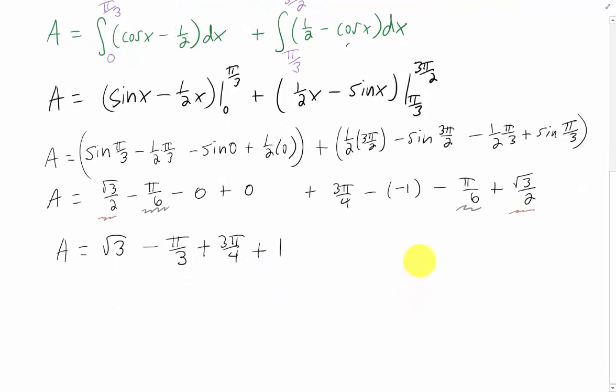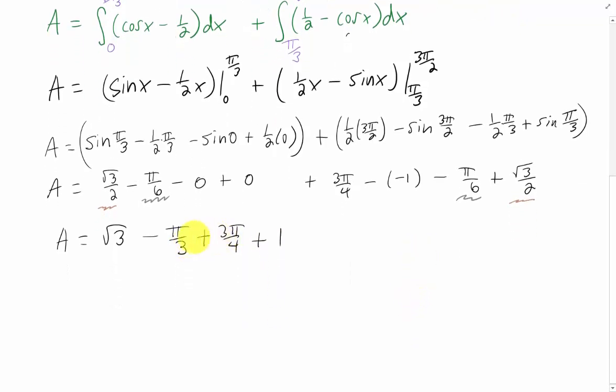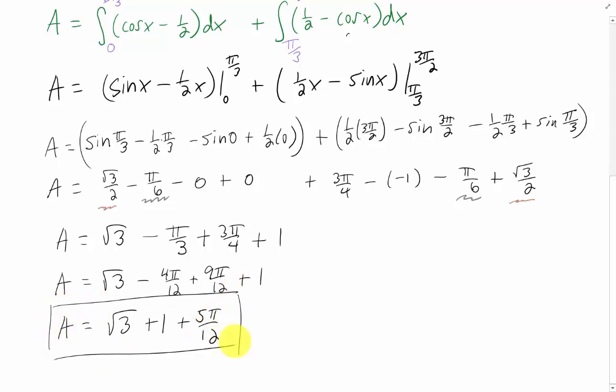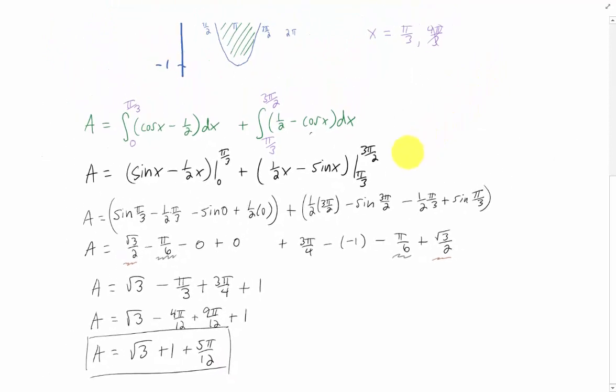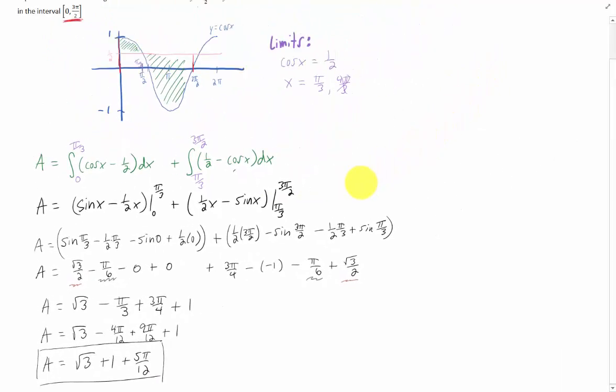If we wanted to simplify as much as we possibly can, we can combine these two fractions that both have a π on them. That's going to give us √3 + 1 + 5π/12, and that should be the answer. That should give us the area between those two curves on the interval that was given to us.